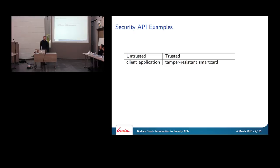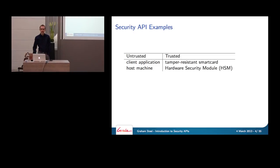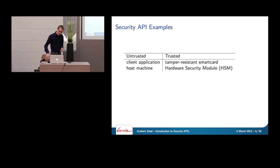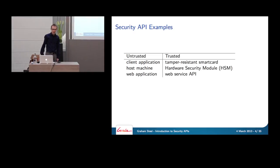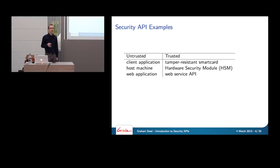A smart card is a classic example — we trust the tamper-resistant card but not what's connected to it. We're also going to look at hardware security modules, which are large dedicated crypto devices used in high-security contexts such as banking and military applications. There are also less obvious security API applications — for example, a web service offering an API to developers for mashup applications, where I want to limit how much data can be extracted.